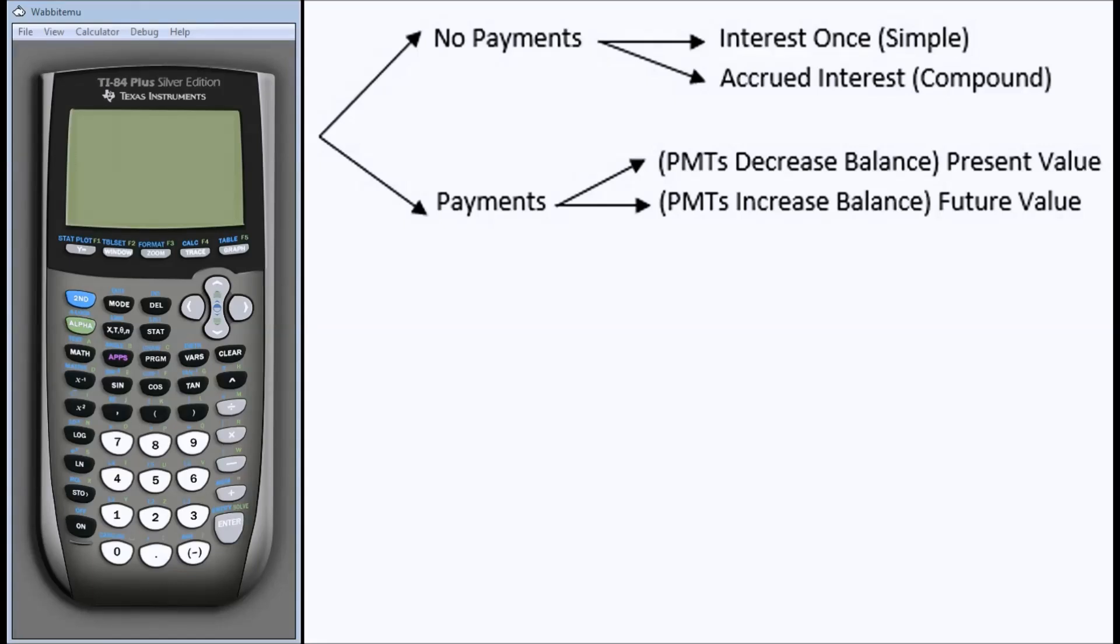The first thing we need to do when looking at any of these problems is ask ourselves, does this problem include multiple reoccurring payments? If that's the case, then we are going to come down the payment side of the decision tree. Otherwise, if we're talking about a single payment, a single investment, a single deposit, we're talking about the no payment side of the decision tree.